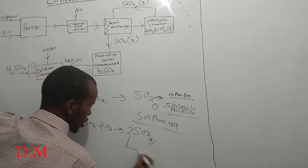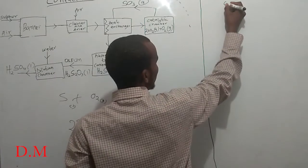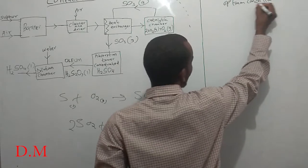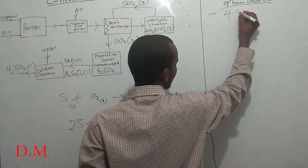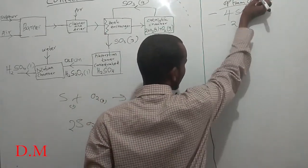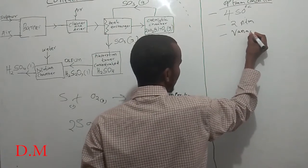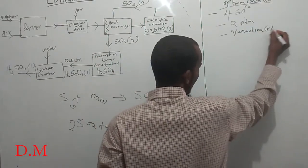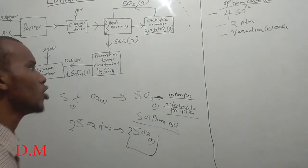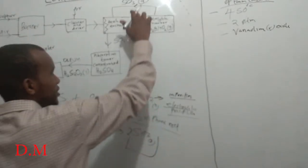The formation of sulfur trioxide requires three optimum conditions: a temperature of 450 degrees Celsius, a pressure of two atmospheres, and a catalyst of vanadium pentoxide (V2O5). These are the conditions for the formation of sulfur trioxide gas.